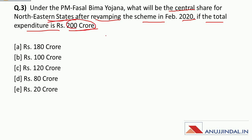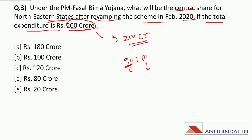If the total expenditure is rupees 200 crore and the share pattern for northeastern states is 90:10 — 90 percent from the central government and 10 percent from the state government — therefore the central government's share will be rupees 180 crore.